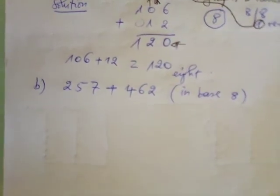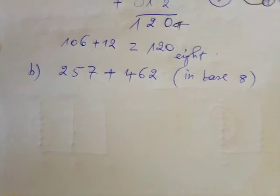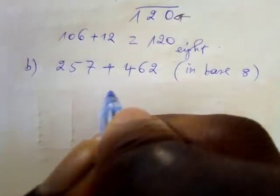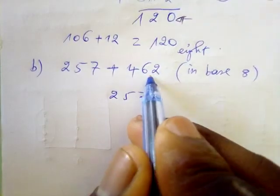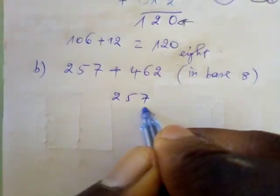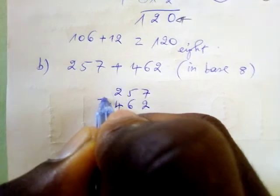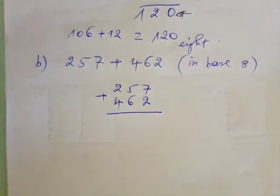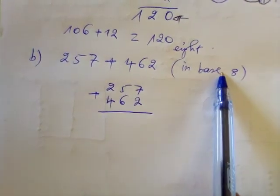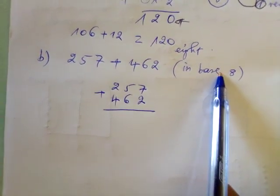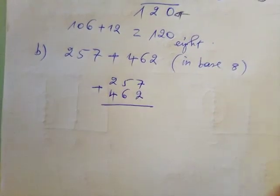We sum vertically, making sure the place values correspond. We have 257 on top and 462 below. We start with the ones column: seven plus two equals nine, and we are in base eight.